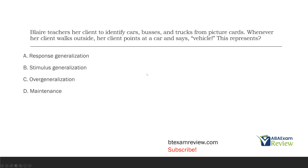It isn't overgeneralization, because this is an appropriate way to generalize. Had he walked up to an animal and said 'car,' that would be overgeneralization. And it isn't maintenance — maintenance is something taught, and saying 'vehicle' was not taught. They're identifying cars, buses, and trucks. Going outside and saying 'vehicle' is this novel response that is generalized from teaching. So whenever a client walks outside, points at the car, and says 'vehicle,' that represents response generalization.